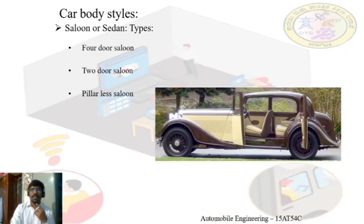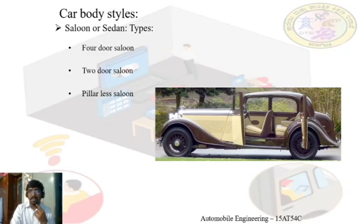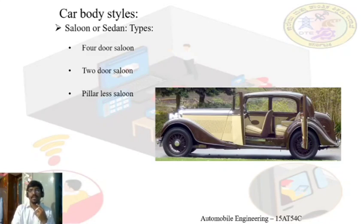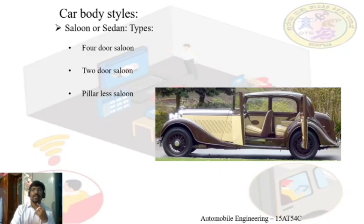This next type is the pillarless saloon. As the name itself indicates, there won't be any pillar. A pillar is what you might have observed in the diagram — in the four-door saloon there will be a pillar, what you generally call the B-pillar. That pillar is completely eliminated in the pillarless saloon. By removing this pillar, it will be very easy for the driver and passengers to get in and get out of the vehicle.